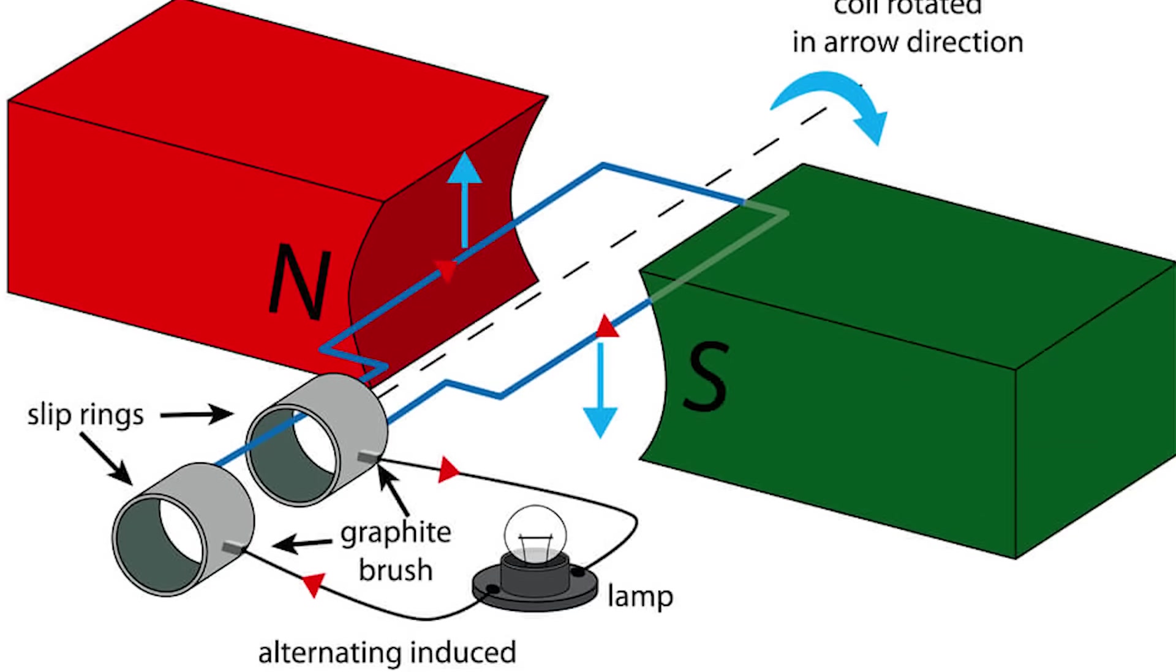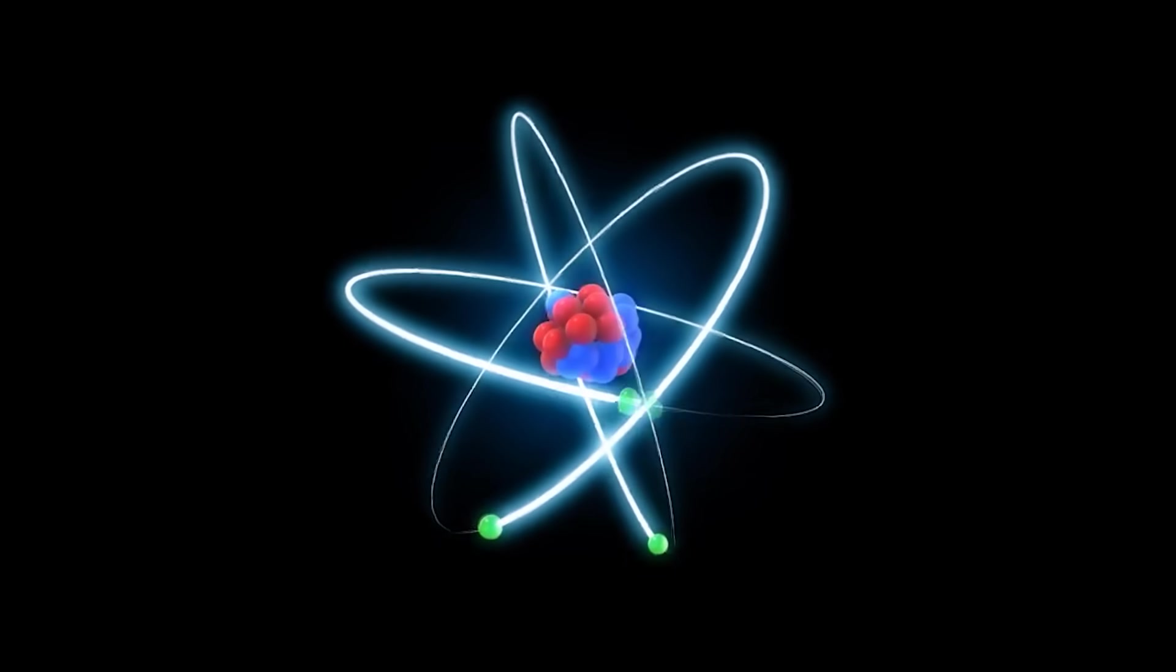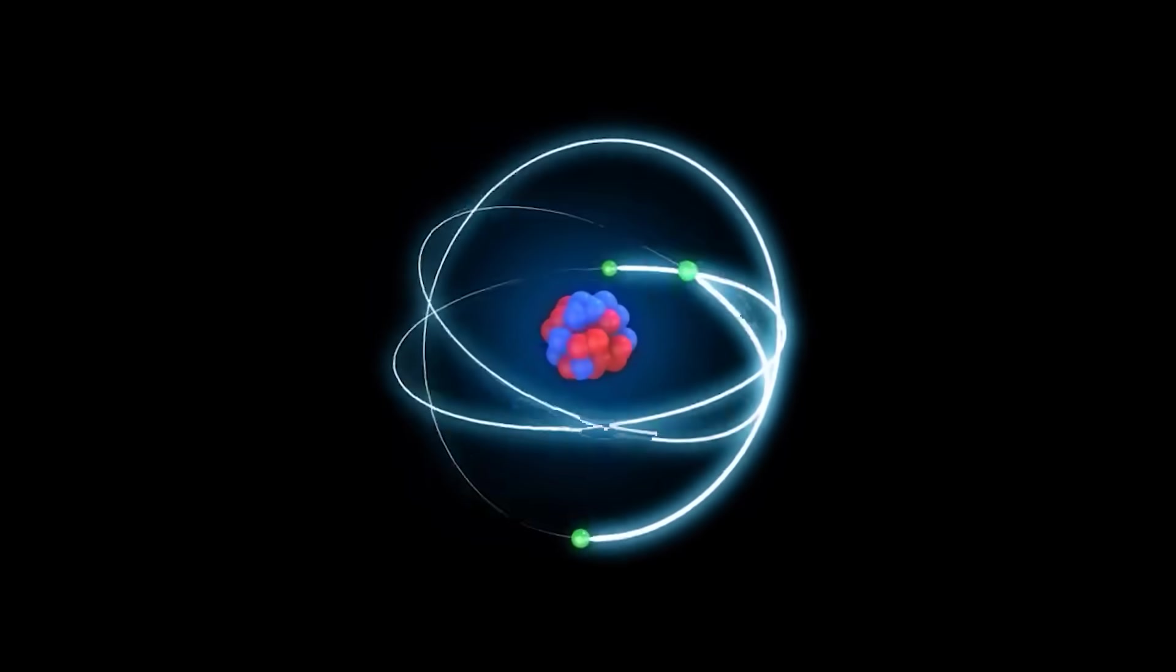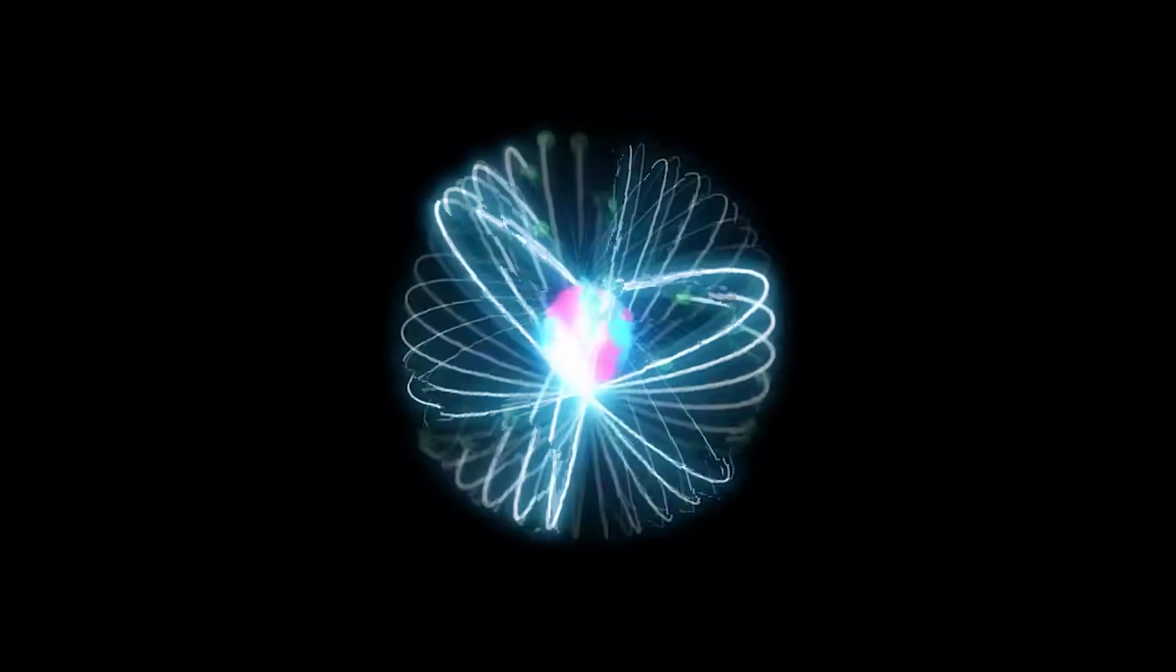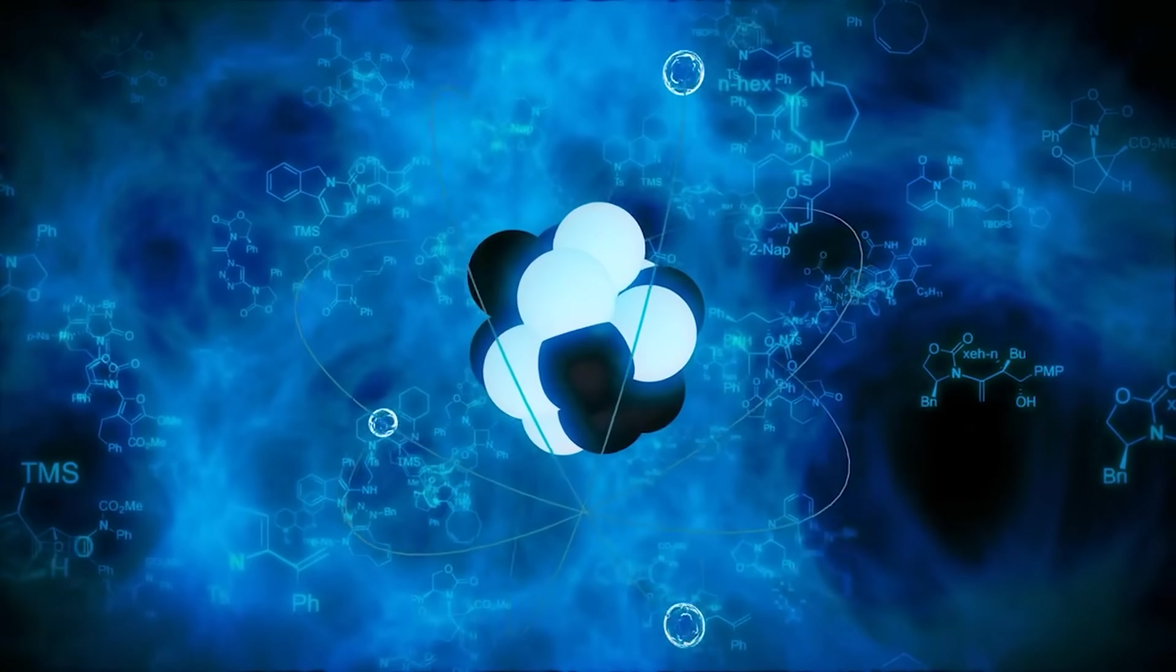The two-way motion of current in AC creates another puzzle. If electrons themselves carry the usable energy, then when they move back toward the source, why would they not carry energy back as well? Yet in a working system, net energy flows from the plant to the load. The chain story cannot easily explain one-way energy flow with two-way charge motion. And that is where the deeper idea enters.